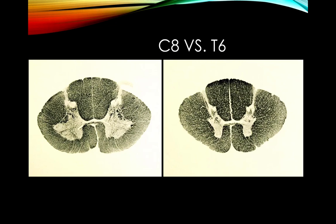When looking at spinal cord sections, you want to identify what level you're at. The most obvious difference between sections is the number of anterior horn cells. This section with many anterior horn cells is C8, which supplies so many muscles near the hand. This other section is T6, with very few anterior horn cells because only intercostal muscles are supplied there. The thoracic cord is identified by this small number of lower motor neurons.